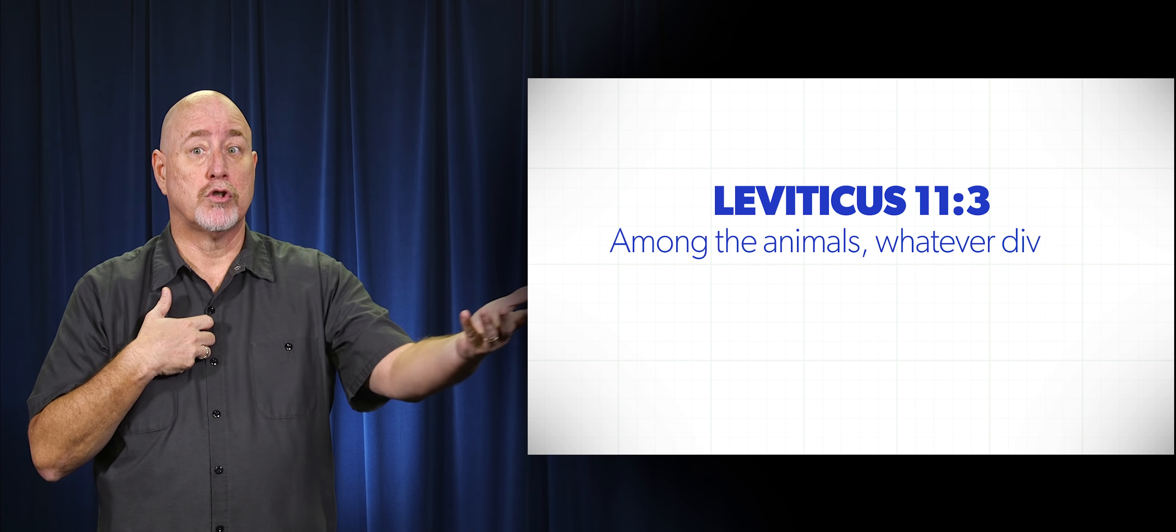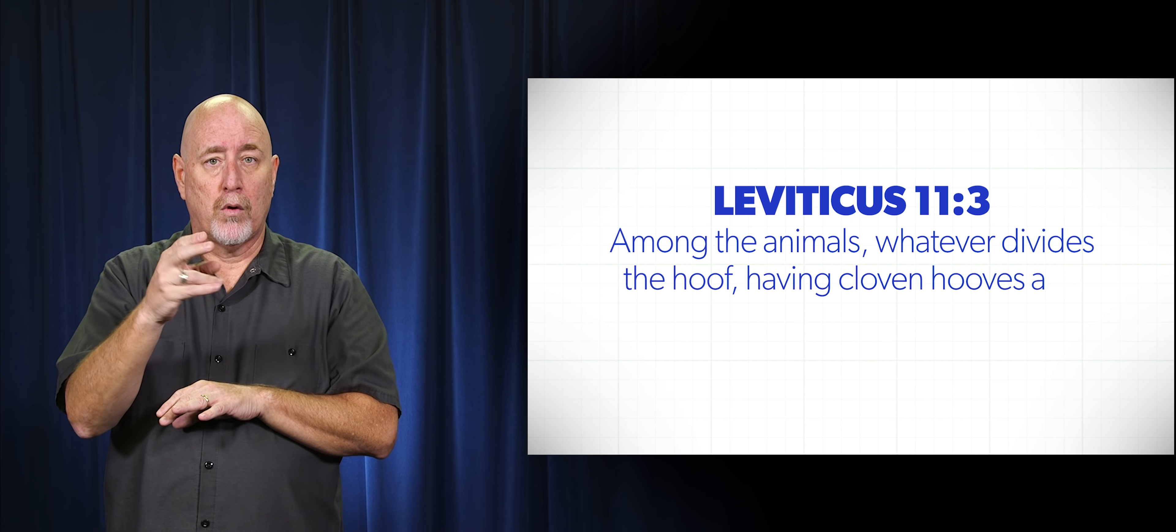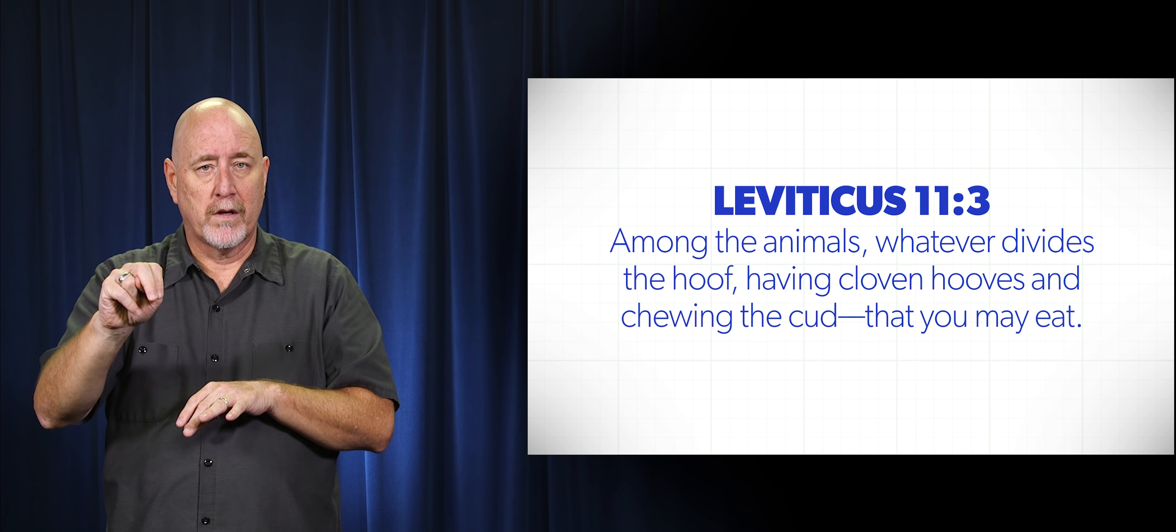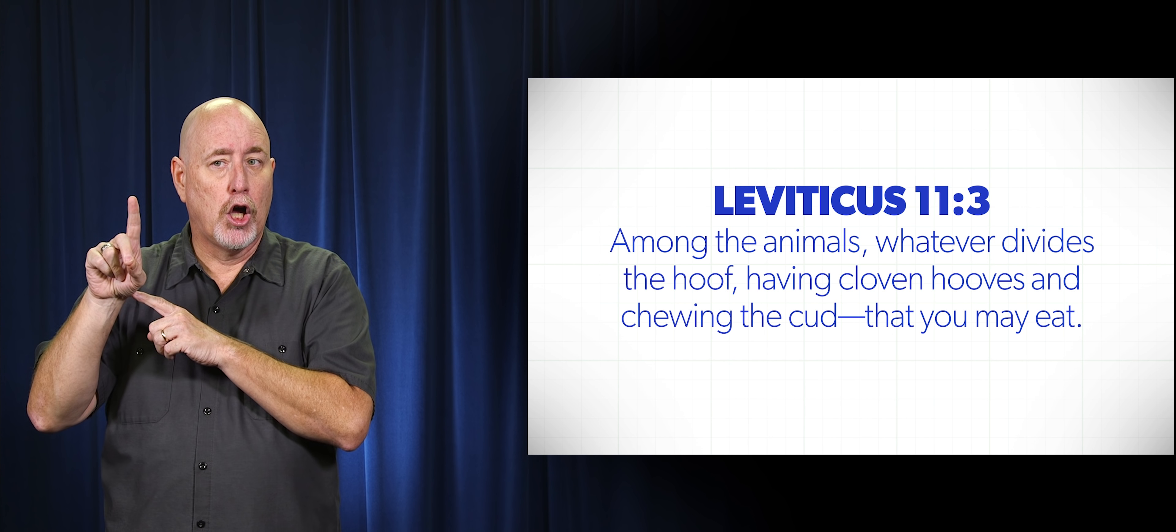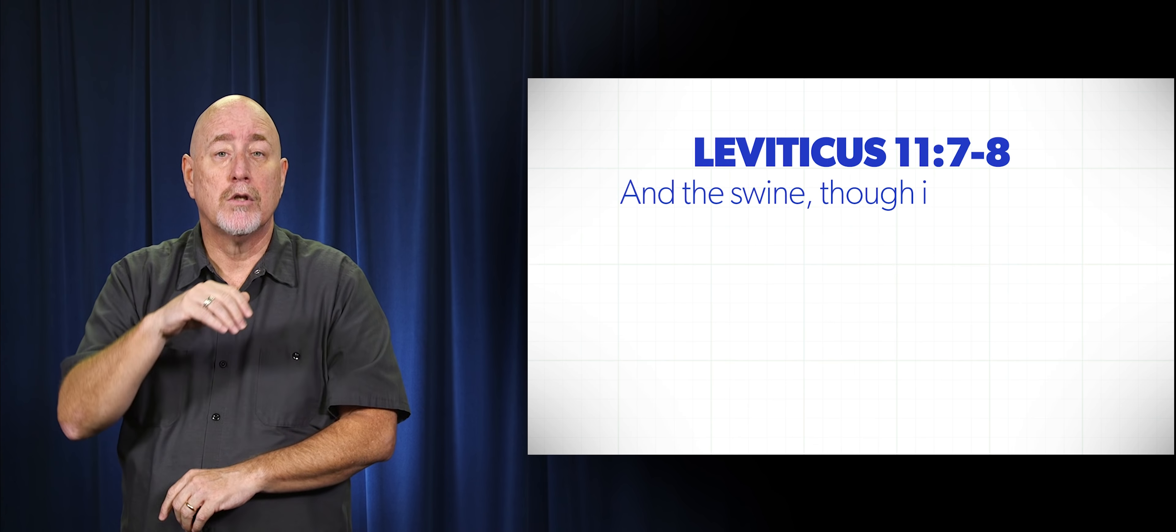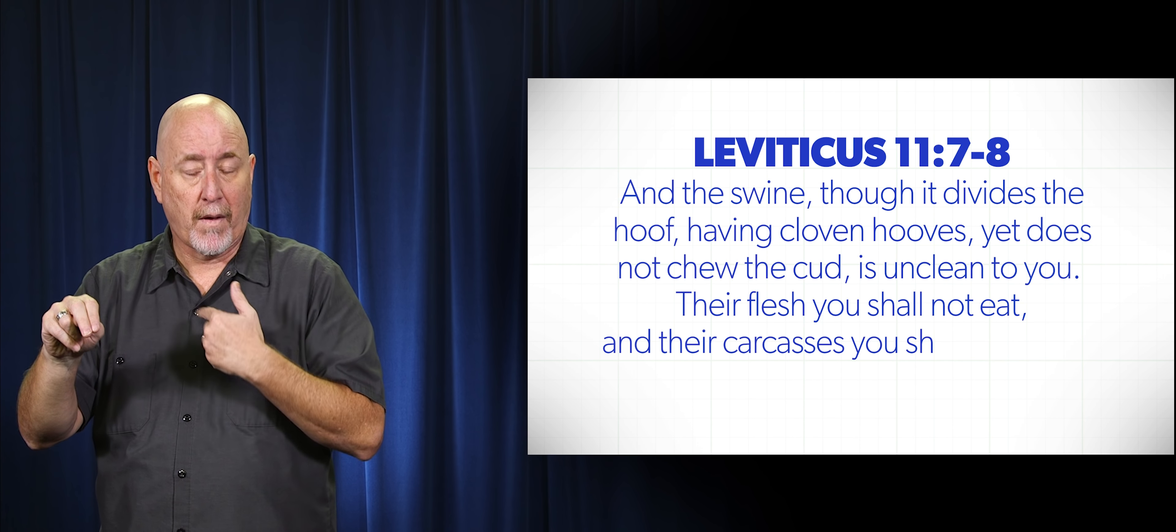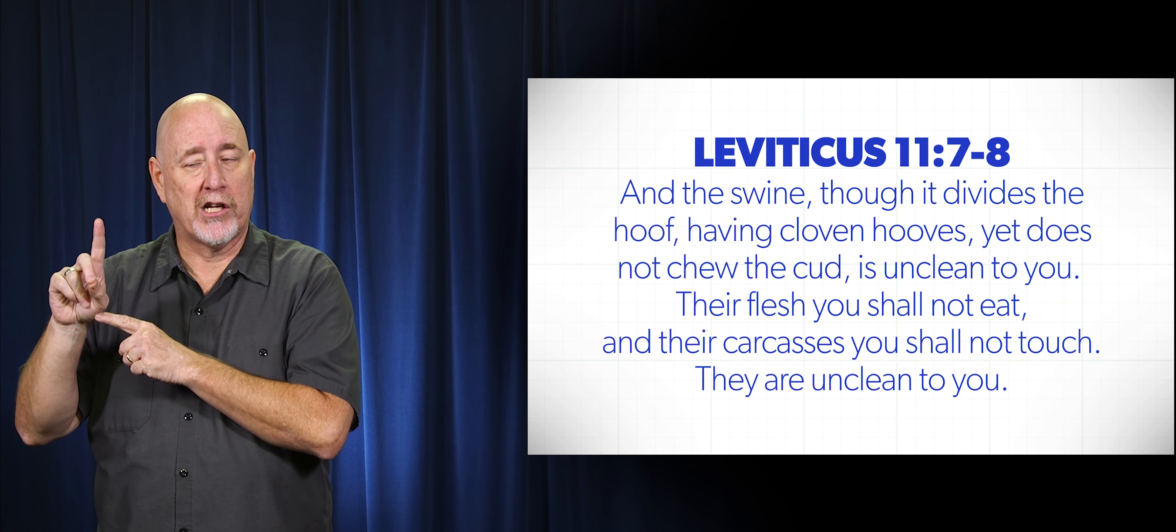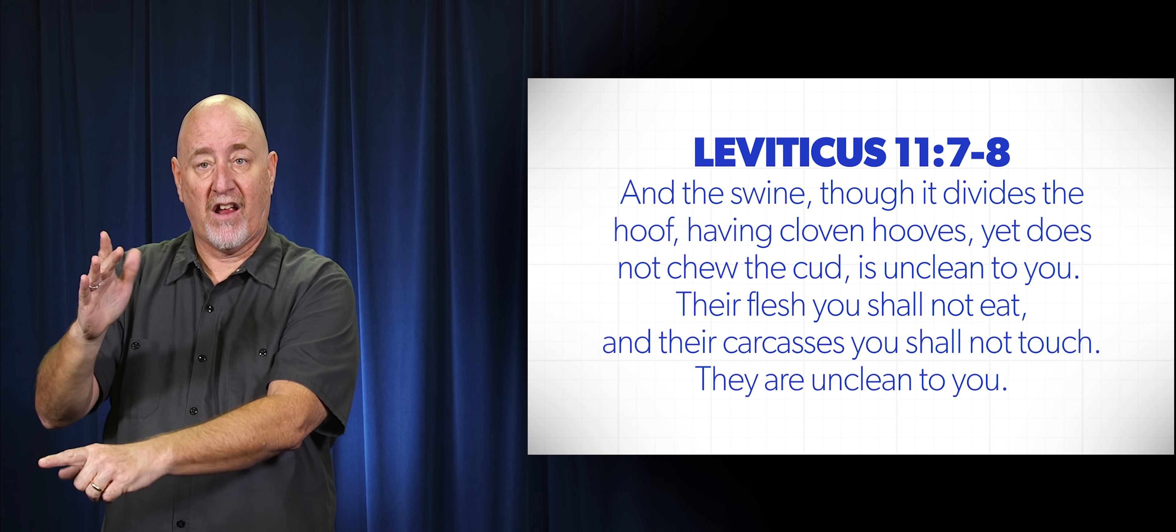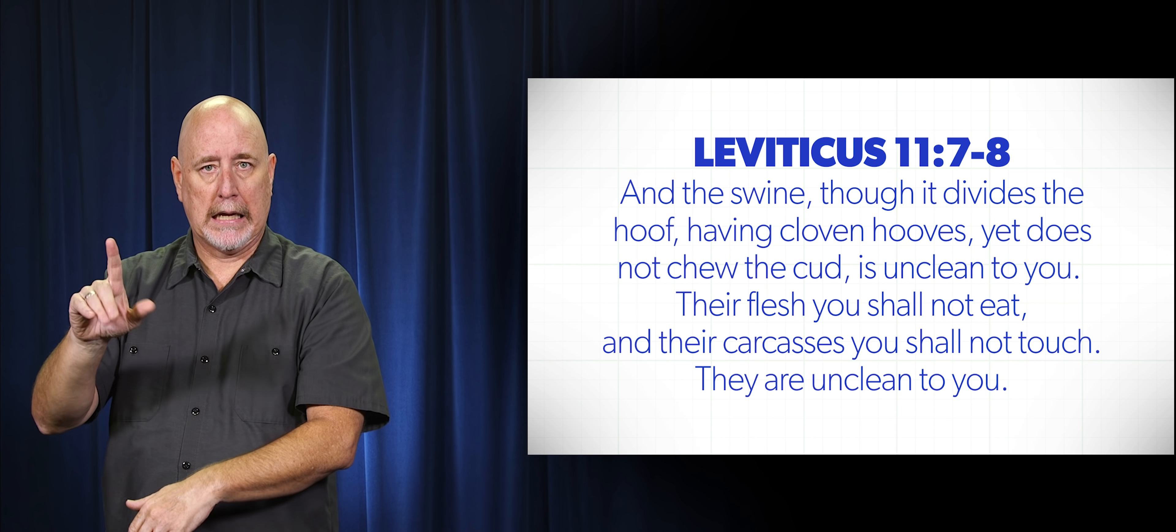Leviticus 11, verse 3 says, Among the animals, whatever divides the hoof, having cloven hooves, and chews the cud, that you may eat. And then it goes on and gives you an example of what kind of animal would not fall into that category. And the swine, though it divides the hoof, having cloven hooves, yet does not chew the cud, it is unclean to you. Their flesh you shall not touch, they are unclean to you.